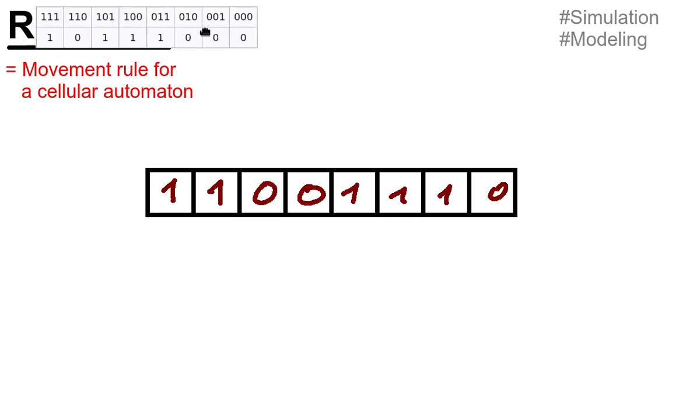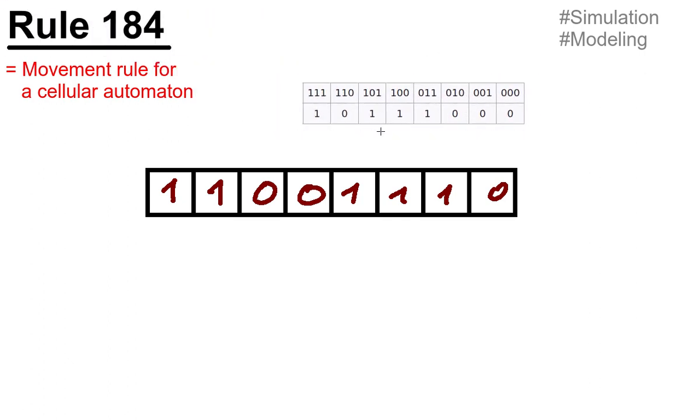But what's the movement rule? If you check Wikipedia, you will find something like this. What does this tell us? It tells us when you have the current cell and the next cell and the previous cell, then this is the value of the new cell.